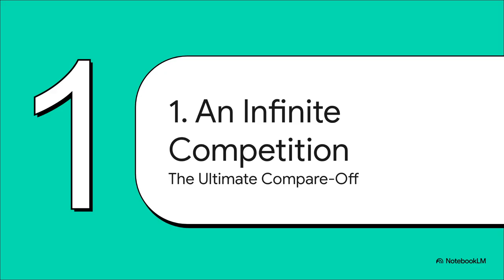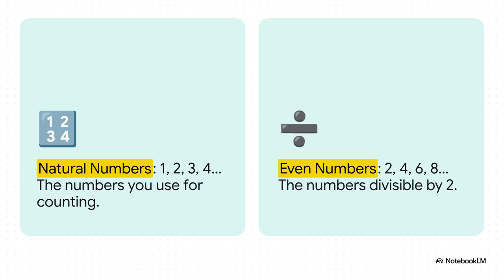To even talk about different infinities, we first got to have a way to compare them. And for that, we need to go back about 150 years to this absolutely brilliant mathematician, George Cantor. Cantor set up this imaginary competition. On one team, you've got the natural numbers. You know, the ones you count with.